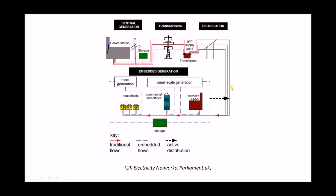Take the southwest of England as an example — we know they have an energy deficit, so any electricity they produce will be used locally and certainly doesn't need to be transmitted northwards. Alongside micro generation we have small-scale generation, such as a small onshore wind farm or a solar array, used to supply local factories and commercial offices. Any surplus is fed into the distribution network through active distribution — it is not fed into the transmission network.